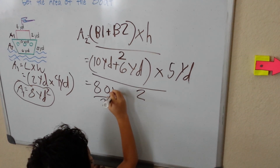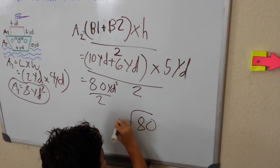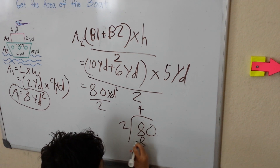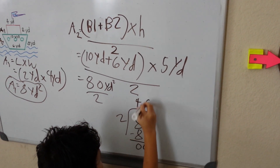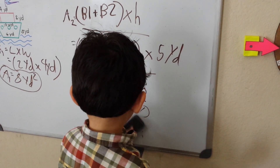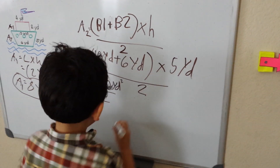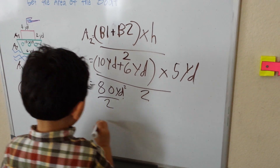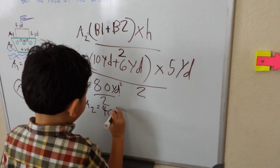Now I'm going to divide this 80 yards squared. 80 divided by 2 — so 8 divided by 2: 4 times 2 is 8, so it's 40. That's equal to 40 yards.